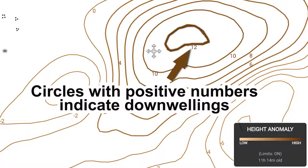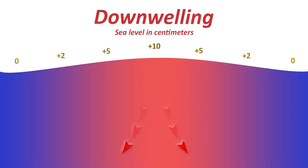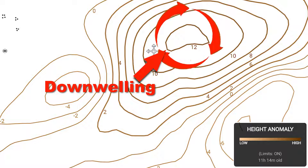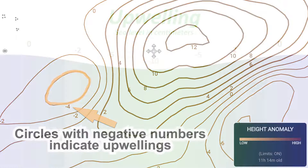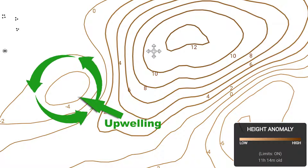It's best to avoid the center of a circle with positive numbers represented with darker orange lines. This is an area where the sea surface has reached a high point and started falling, which denotes a downwelling. It's also interesting to note that a downwelling produces a clockwise current around the center. In contrast, the center of an upwelling will be a circle with negative numbers represented with lighter orange lines. In this area the sea surface height has reached a low point and started to rise, often bringing cooler nutrient-rich water up from the bottom, and upwelling produces a counterclockwise current.